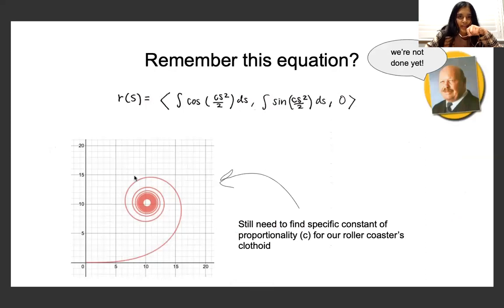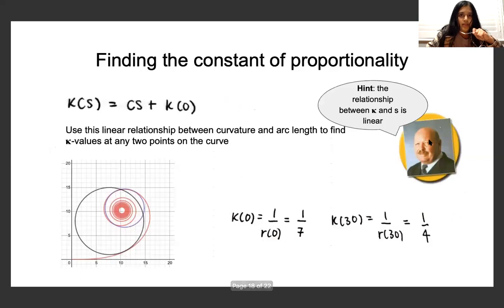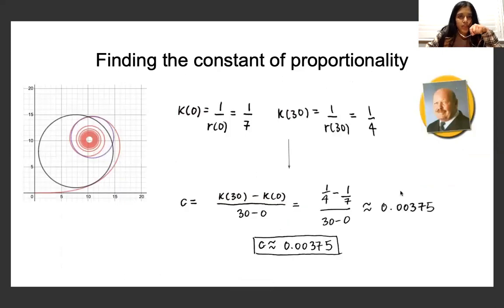But we're not done yet. Because remember this equation? We have CS² and C is a constant of proportionality which is specific to each loop. And we still need to find our specific constant of proportionality for our roller coaster's clothoid. So using the function K(S) = CS plus the initial curvature, we can use that linear relationship between curvature and arc length to find the K values at any two points on the curve. I used the maximum curvature and the minimum curvature of 1/7 and 1/4. And using 1/7 and 1/4, which were my two radiuses or my two curvatures, I was able to compute C to be 0.00375 for this particular loop-de-loop.